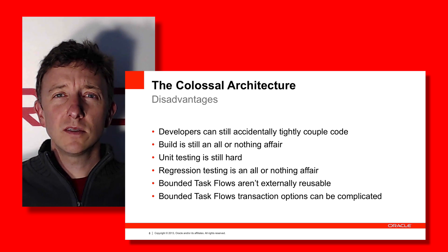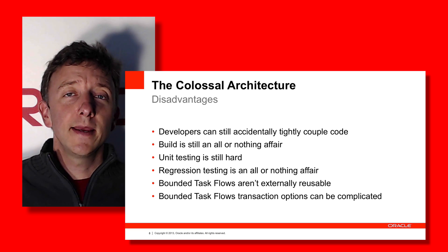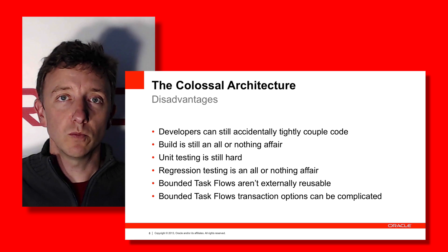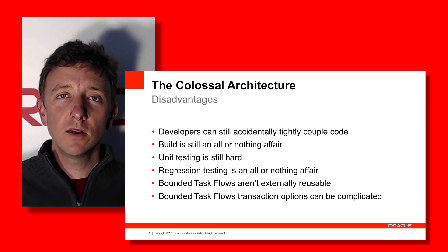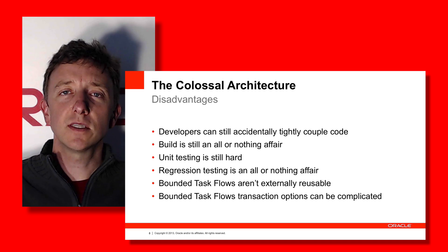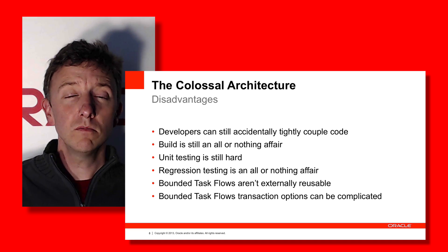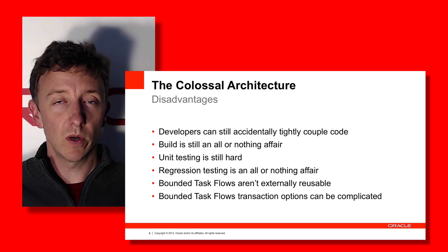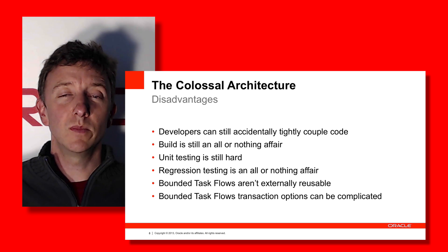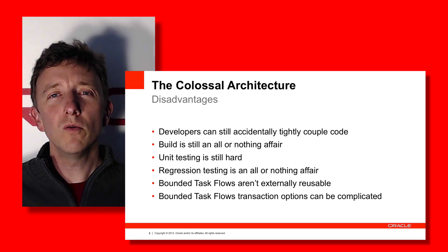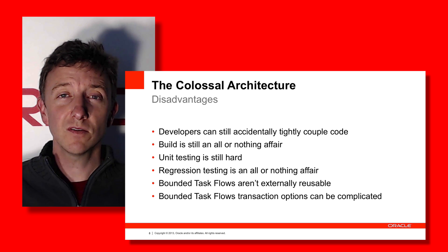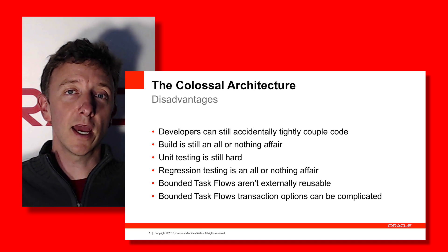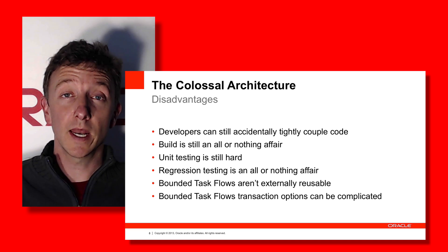With bounded task flows, a whole bunch of new options become available — and not just the architectural building block aspect. This slide talks about transaction options, but there are all sorts of other features that come into play that make building applications a little bit more complex, because you've got to understand those options if you want to make use of them. You could consider this a disadvantage of the Colossal Pattern — though it's also really a disadvantage of bounded task flows in general. But when you adopt anything, it's always going to have advantages and disadvantages.